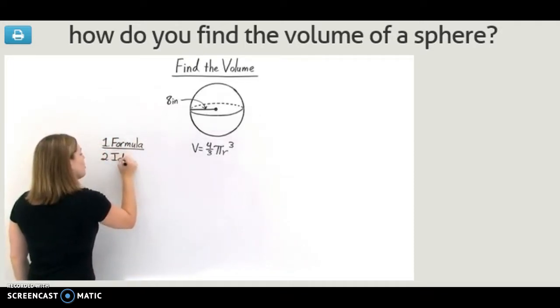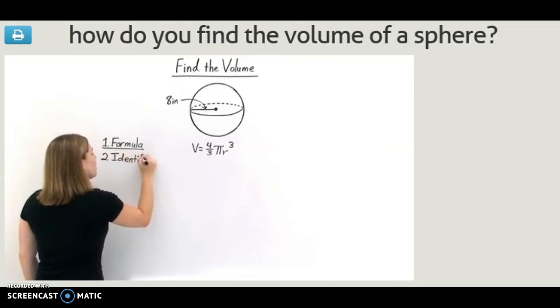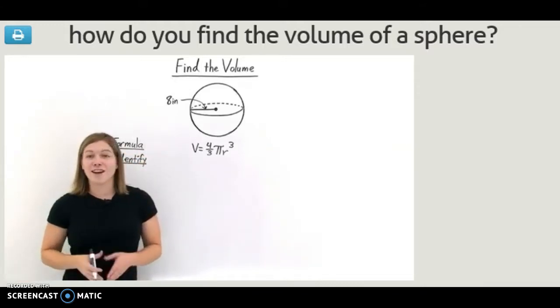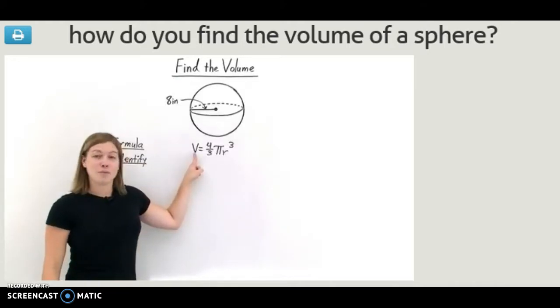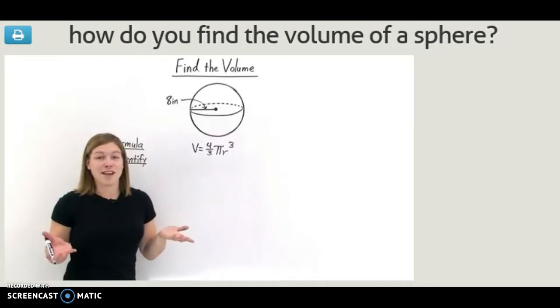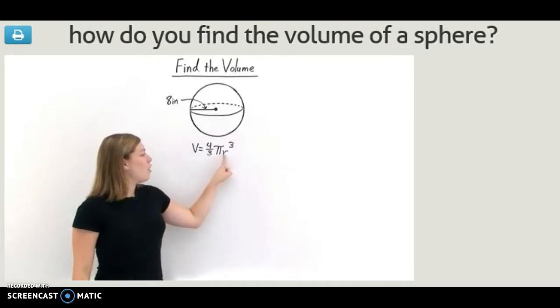In step number two, let's identify the variables in this formula so that we can then plug in their values and solve to get the volume. Well, v is the volume of our sphere, which is what we're trying to find, and we don't know that yet. Now, what about r?